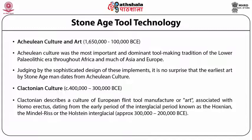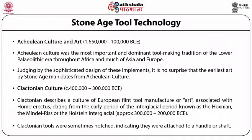Clactonian culture describes a culture of European flint tool manufacturing associated with Homo erectus, dating from an early interglacial period known as the Hoxnian. It was named after a type site located in Clacton-on-Sea on the southeast coast of England and at Swanscombe in Kent. The latter also provided evidence for the existence of a subspecies of Homo erectus known as Swanscombe man. Clactonian tools were sometimes notched, indicating they were attached to a handle or shaft.